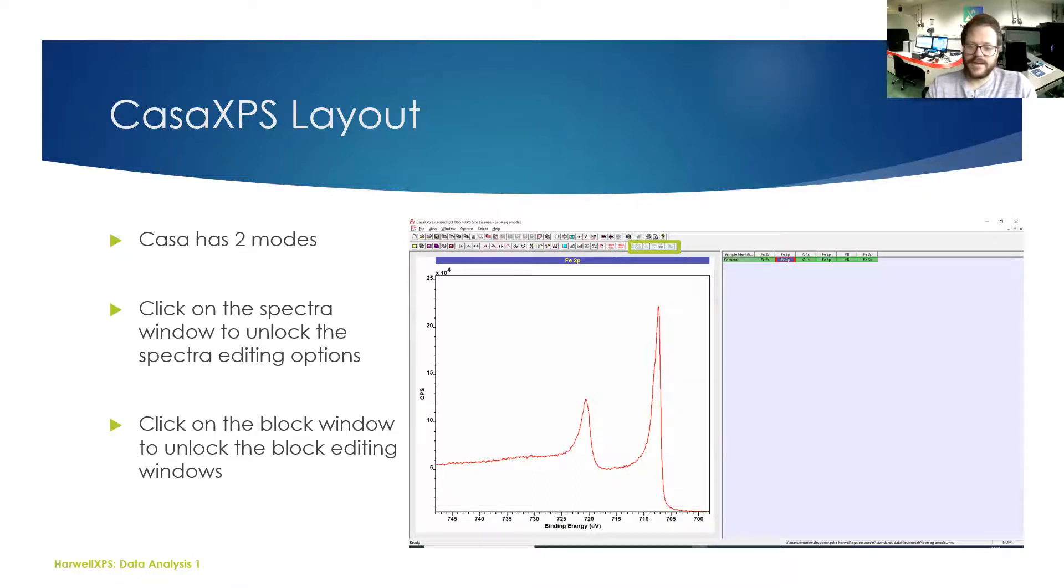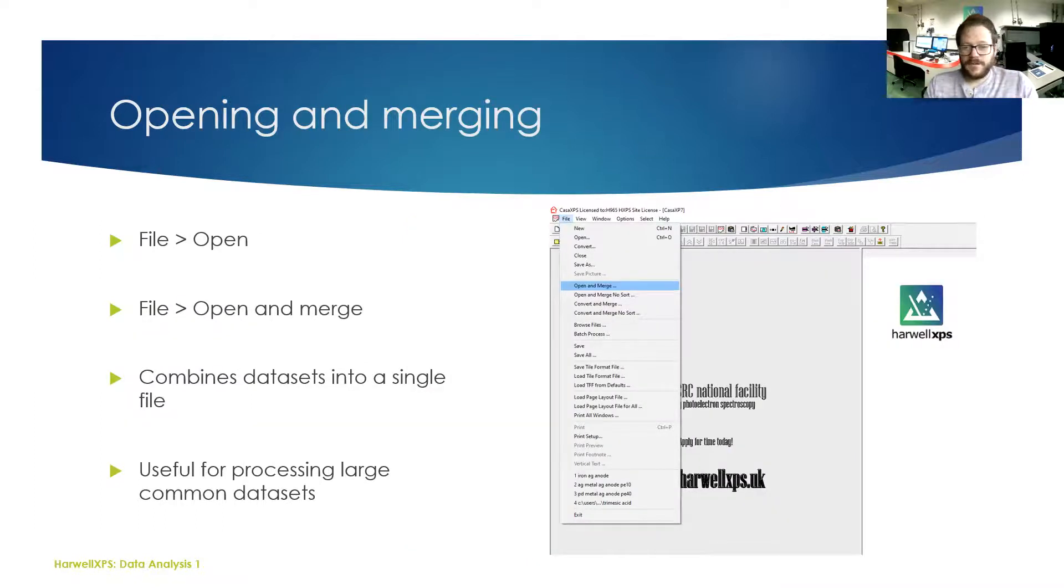Getting started: opening and merging files. Opening files is pretty straightforward: File, Open. If you have multiple VAMAS files with lots of different spectra from samples that are all in a series, you might want to open and merge those. This just enables you to combine lots of data sets into a single file. It does make it easier if you are processing large data sets where you might want to copy models from sample to sample.